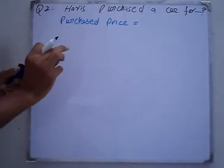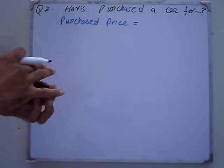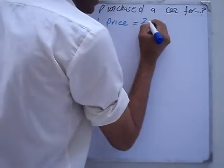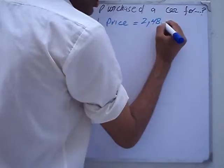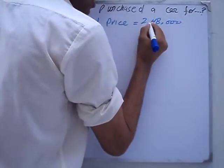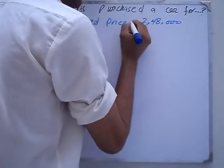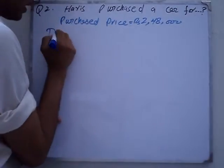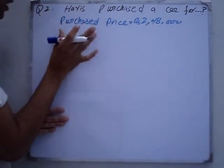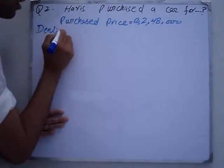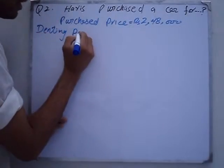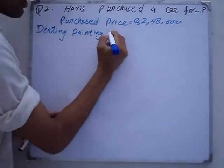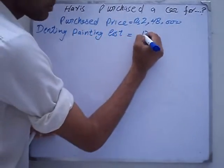The purchase price is 248,000 rupees. And he spent RS 12,000 on its denting and painting. The denting painting cost is 12,000.